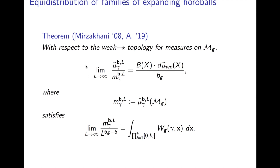Here's a theorem one can prove. This was proved by Mirzakhani in the case of a simple closed curve, then extended by myself to the case of general multi-curves and other more general settings. The idea is that with respect to the weak-star topology for measures on moduli space, if I take my horoball measure after pushing it down to moduli space and normalize it to be a probability measure, then it equidistributes — but not to what one might first expect, which is just the Weil-Petersson measure. It equidistributes to the Weil-Petersson measure with a density function, which is precisely the Mirzakhani function mentioned before. The factor VG is exactly what makes it a probability measure.